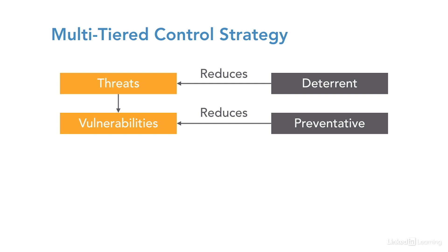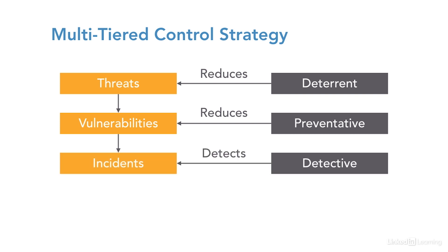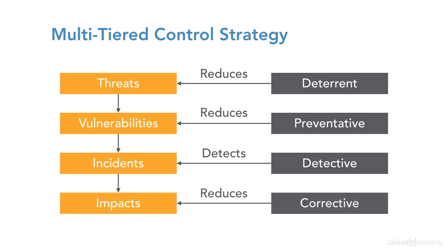Preventative controls are designed to stop the attack from succeeding by not allowing it to get at an asset to exploit a vulnerability — a firewall is one such preventative control, blocking protocols that might be used as attack vectors. Detective controls are used to detect that an attack has taken place; a burglar alarm is a typical example. Finally, corrective controls are used to reduce the impact of an incident, a good example being recovery from data backups. The NIST Cybersecurity Framework presents corrective controls as the Respond and Recover functional controls.